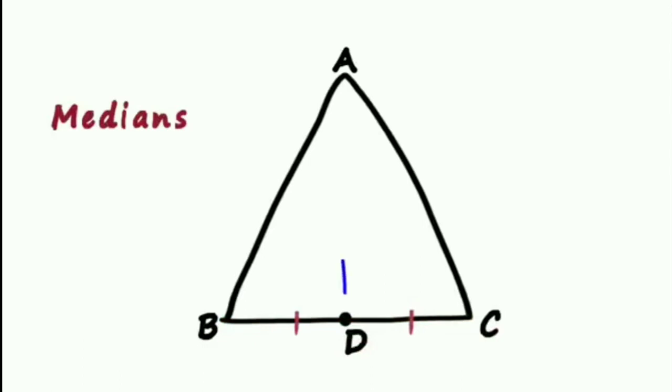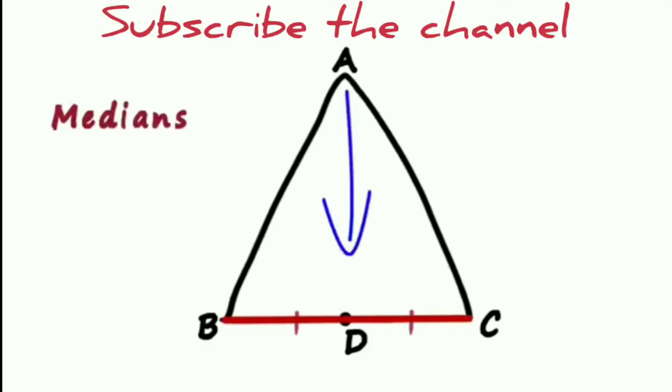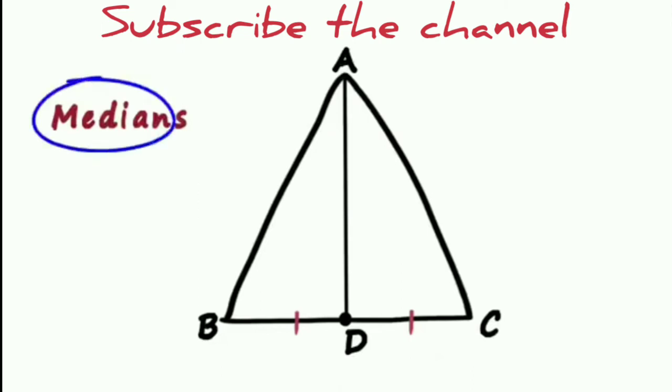Segment BC is the opposite side of vertex A. A segment drawn from vertex A to opposite side BC at the midpoint is called a median. So segment AD is one of the medians of triangle ABC.